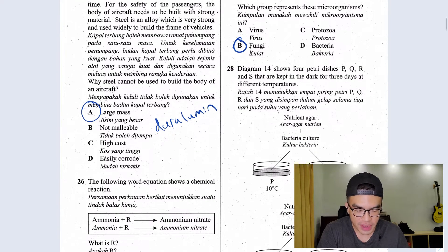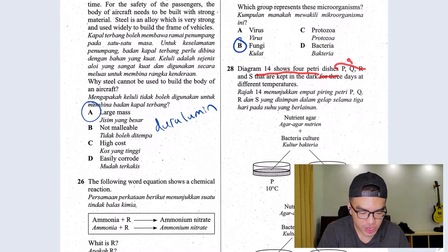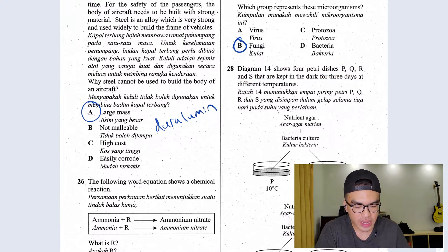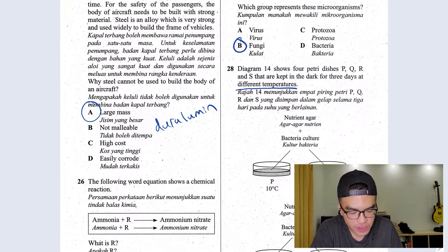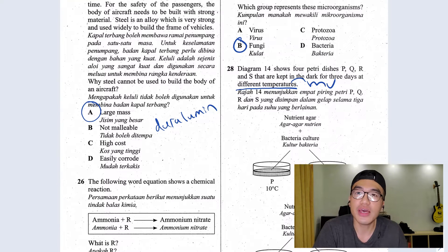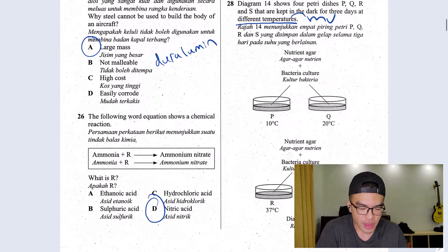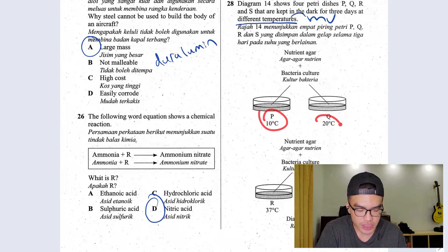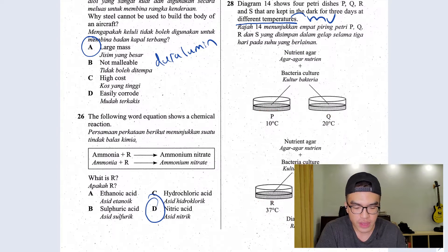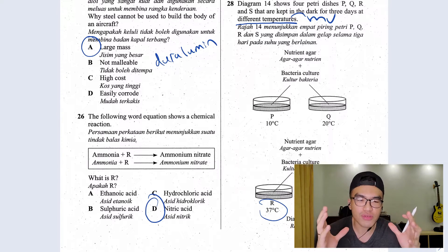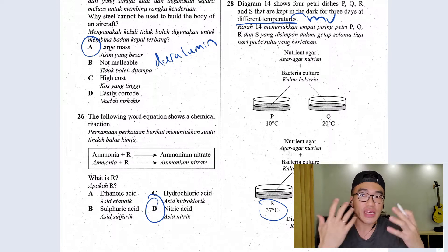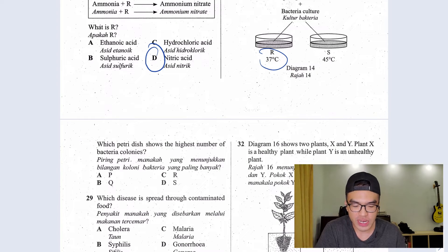Question 28, diagram 14 shows four petri dishes P, Q, R and S kept in the dark for three days at different temperature. Kindly notice different temperature. This would be our manipulated variable. Therefore, as you can see here you have 10 degrees Celsius, 20, 37 and 45. 37 being the optimum temperature, the temperature that most microorganism will thrive at, they love being at 37. Which shows the highest number of bacteria colonies? Obviously the answer would be R.